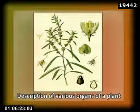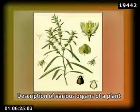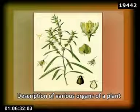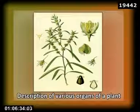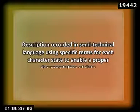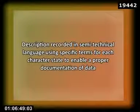stem, flower, sepals, stamens, carpels, fruits, etc., as shown in the figure. For each character, an appropriate character state is listed. For example, flower color may be red, yellow, white, etc. The description is recorded in semi-technical language using specific terms for each character state to enable proper documentation of the data.